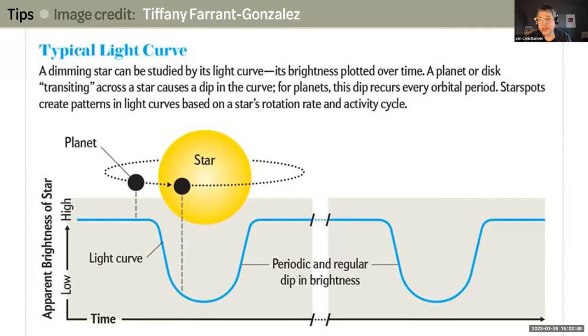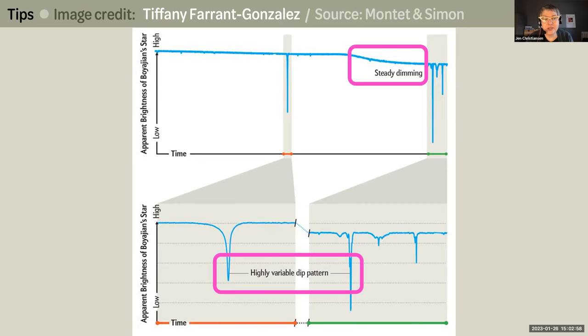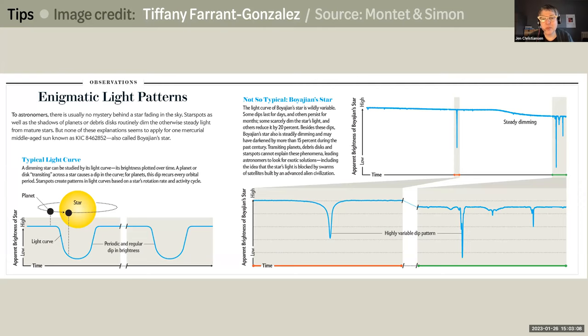Here's the common pattern. And then here's the unusual pattern exhibited by Tabby's star. We also included labels to help direct attention to the critical parts — an interval of steady dimming, and then the highly variable dip pattern. Here's the full box showing those two views side by side. By showing a more common star dimming situation on the left, the reader has a better appreciation for why the irregular pattern on the right is notable.